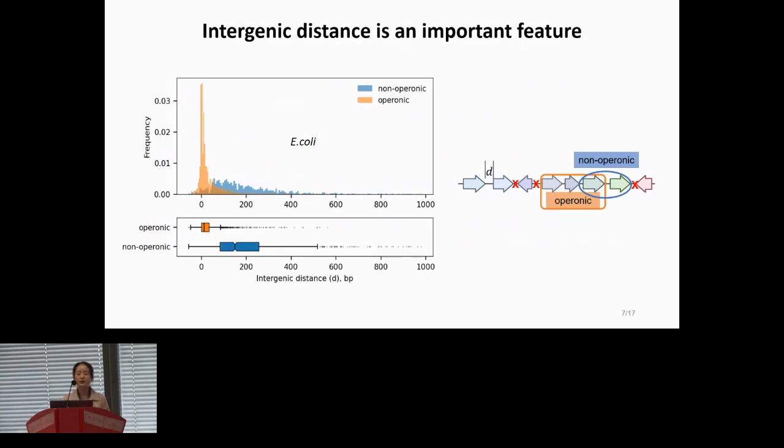Let's move on to the two types of data sources used in our method. The first is intergenic distance, denoted as d here. It's basically the number of base pairs between two neighboring genes. By the operon definition, we already know the neighboring genes on different strands cannot be in the same operon. So, in this project, we only consider the neighboring genes on the same strand. The two figures on the left show the distribution of intergenic distance. As shown in these two plots, we can see the orange is for operonic pairs, the blue is for non-operonic pairs. From these two plots, we can see the neighboring pairs belonging to the same operon tend to exhibit a small intergenic distance. So, this feature is very important for operon prediction.